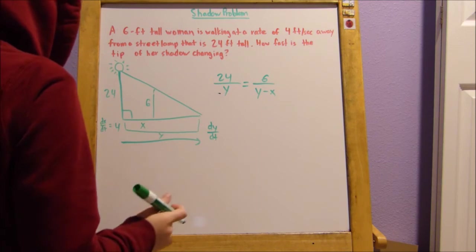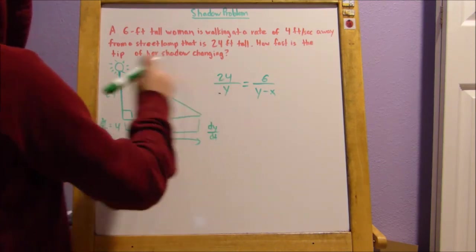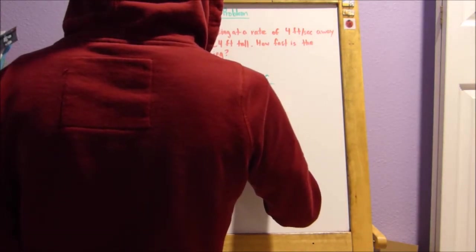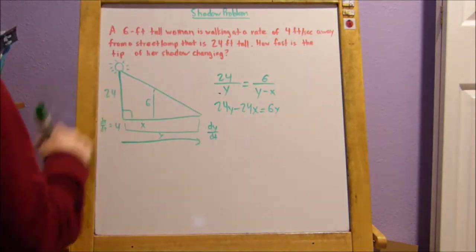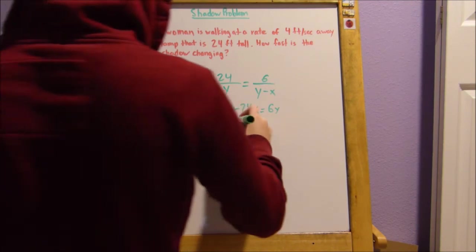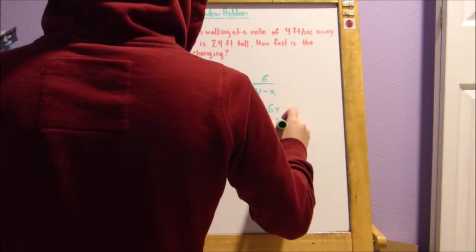Now, what we do is we cross-multiply, so we get 24y minus 24x equals 6y. Then, what we do is we subtract 24y. We get negative 24x equals negative 18y.